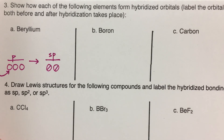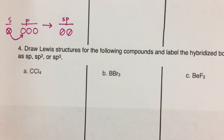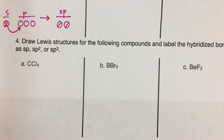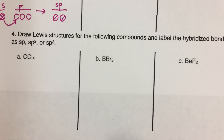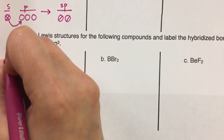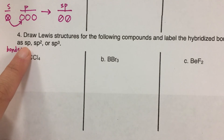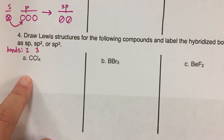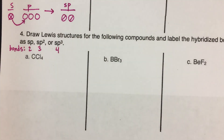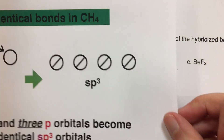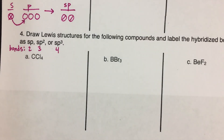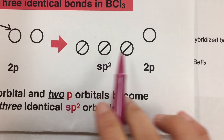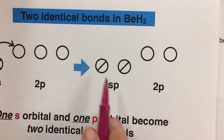Question four says to draw Lewis structures for the following compounds and label the hybridized bonding as SP, SP2, or SP3. A helpful rule: if an atom is SP hybridized it has two bonds; SP2 hybridized means three bonds; and SP3 hybridized means four bonds. You can see this in the notes we just reviewed: SP3 allows four bonds, SP2 allows three bonds, and SP allows two bonds.